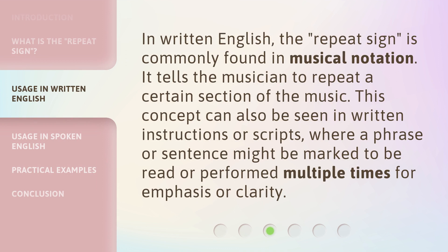In written English, the repeat sign is commonly found in musical notation. It tells the musician to repeat a certain section of the music. This concept can also be seen in written instructions or scripts, where a phrase or sentence might be marked to be read or performed multiple times for emphasis or clarity.